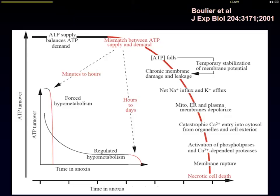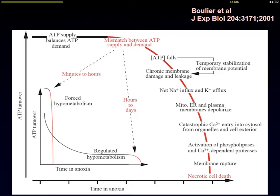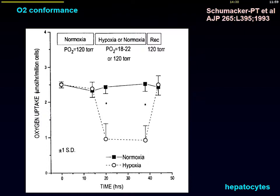We have to realize that the cells cannot tolerate this mismatch between ATP supply and demand for long, because events will ultimately lead to cell death through loss of membrane permeability. However, there is the possibility of regulated hypometabolism: cells stop some less essential reactions to spare oxygen and use it only for the most important functions. For example, a muscle cell will stop contracting, a kidney cell will stop making exchanges, causing renal dysfunction — but the cell will still survive through oxygen conformance.